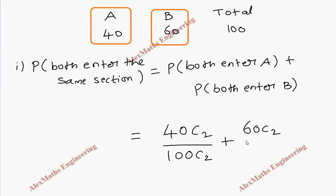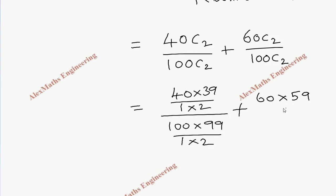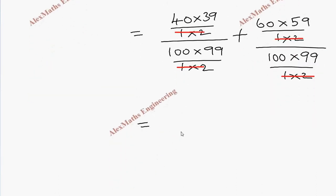Coming to the calculation part: 40 into 39 divided by 1 into 2, whole divided by 100 into 99 divided by 1 into 2, plus 60 into 59 divided by 1 into 2, whole divided by 100 into 99 divided by 1 into 2. We can cancel all the common denominators. Both denominators are the same, so we take a common denominator 100 into 99 divided by 1 into 2.